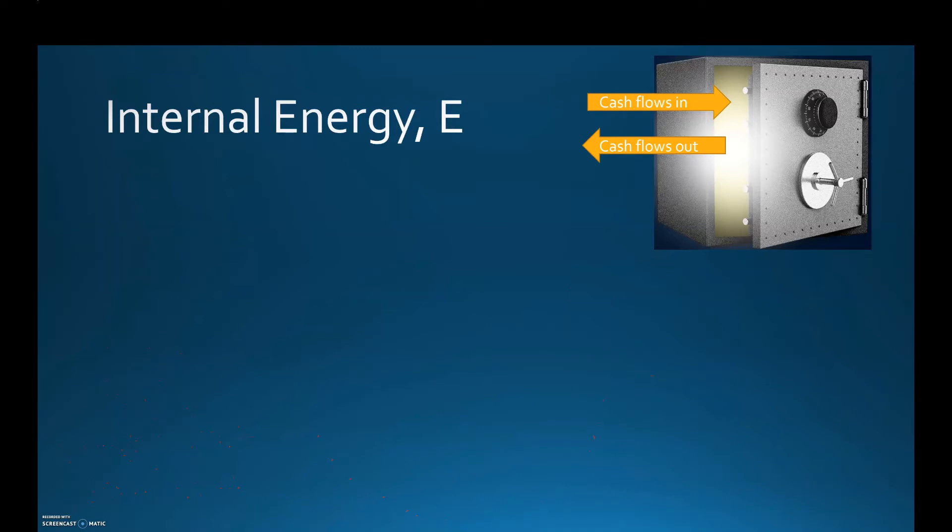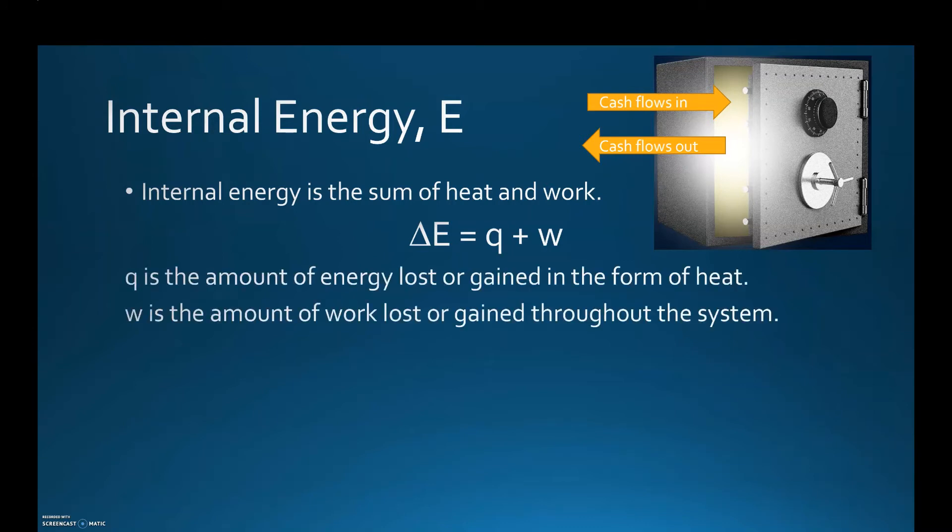As we start to talk about internal energy, internal energy is based off of two things: it's based off of heat and work. There's a specific equation that we use to represent internal energy, and that is ΔE = q + w. Q is the amount of energy lost or gained in the form of heat. We just talked about q in the previous slide, whether you're endothermic or exothermic. Endothermic has a specific sign that you assign to it, and this is for q specifically, so it would be a positive value.